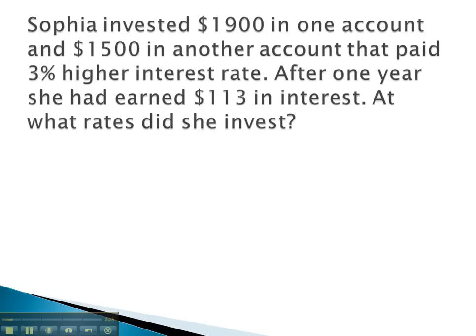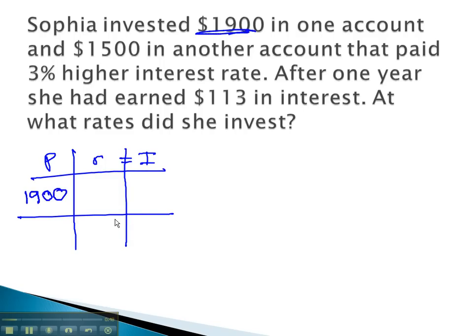In this problem, we see Sophia investing in two accounts. We know that the principal times the rate is going to equal the interest. Her first investment is $1,900. That's her starting amount, or principal.